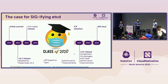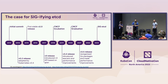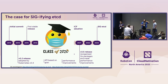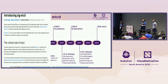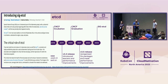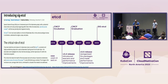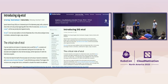Two years after, in 2020, etcd moved to the graduated level as a CNCF project — yes, etcd is a pandemic graduate. Then three years later, in March this year, Hong Kong and Merrick proposed making etcd a special interest group in Kubernetes. After finalizing all the details, on September 12th etcd officially became a special interest group in Kubernetes. We have a blog post on both the etcd and Kubernetes websites with more details.